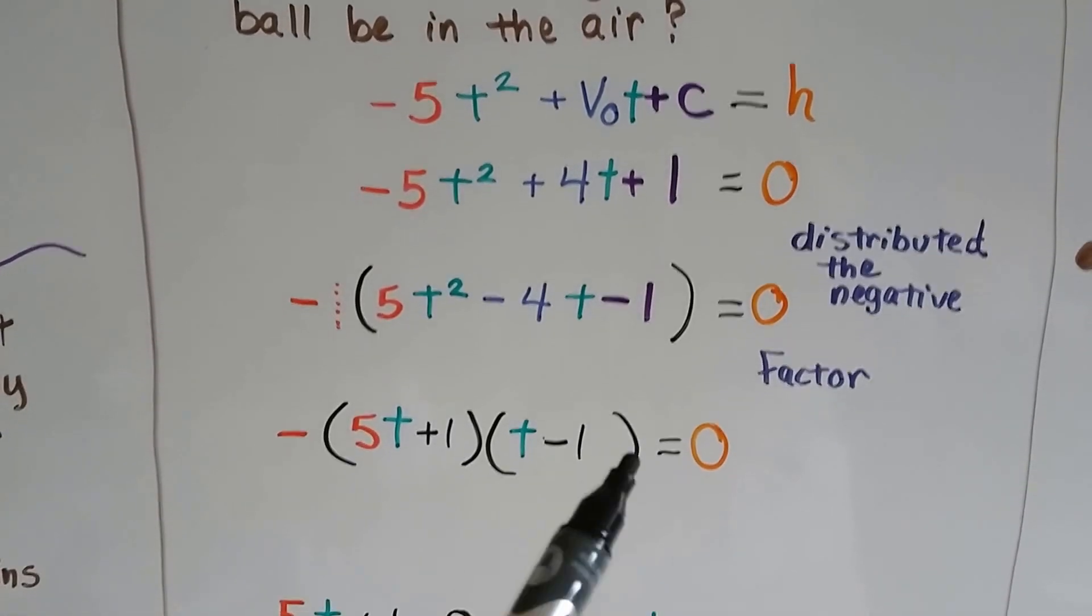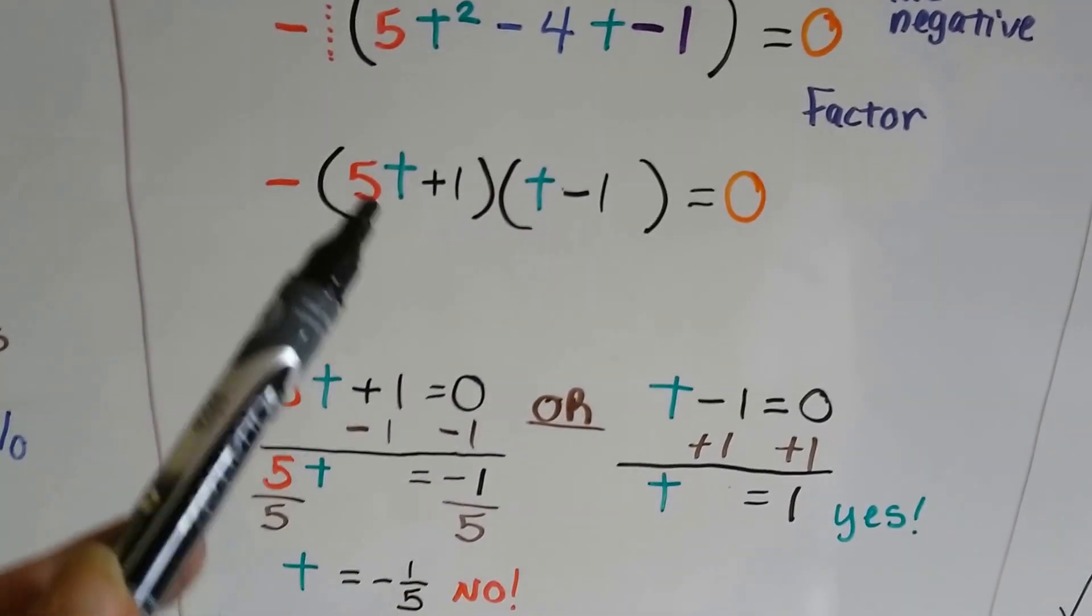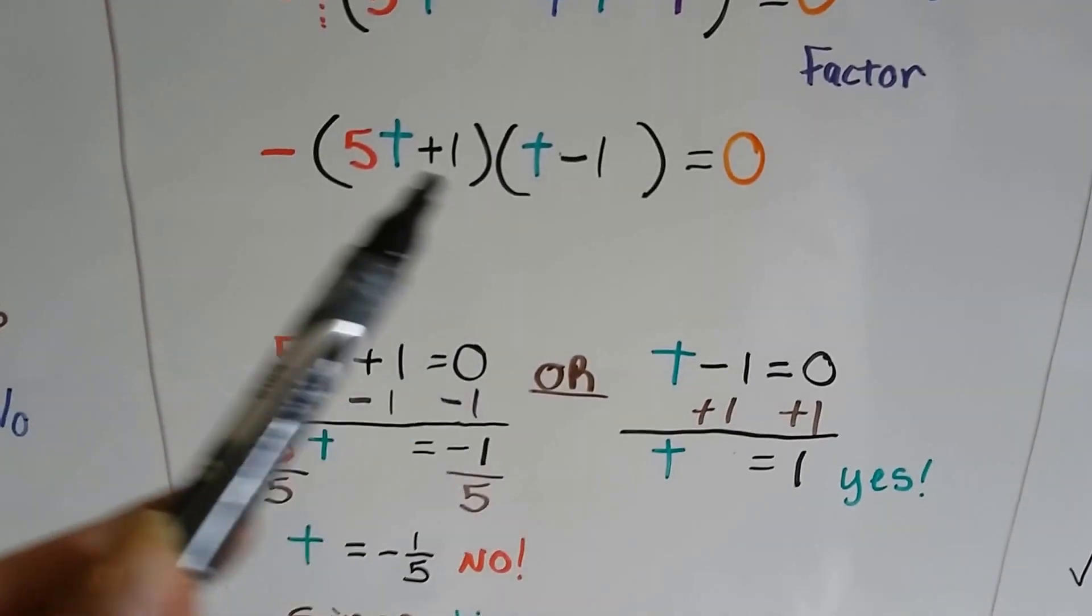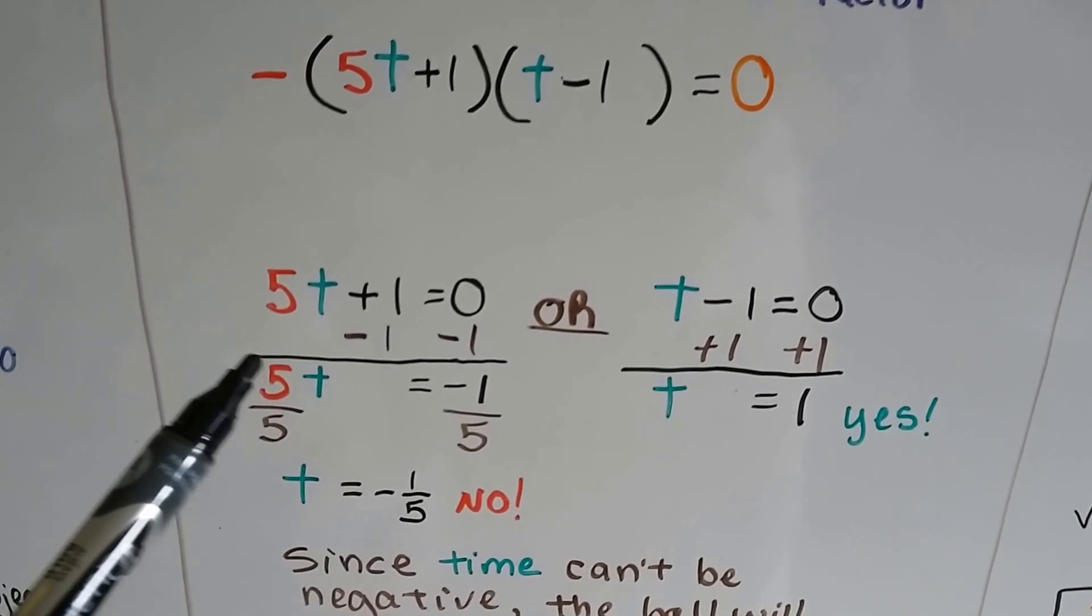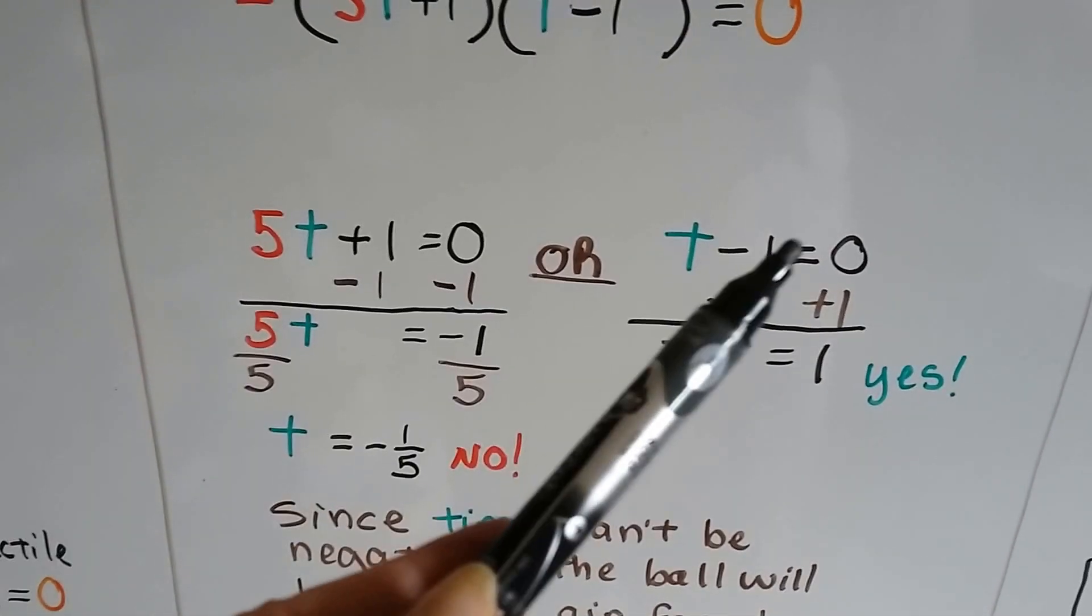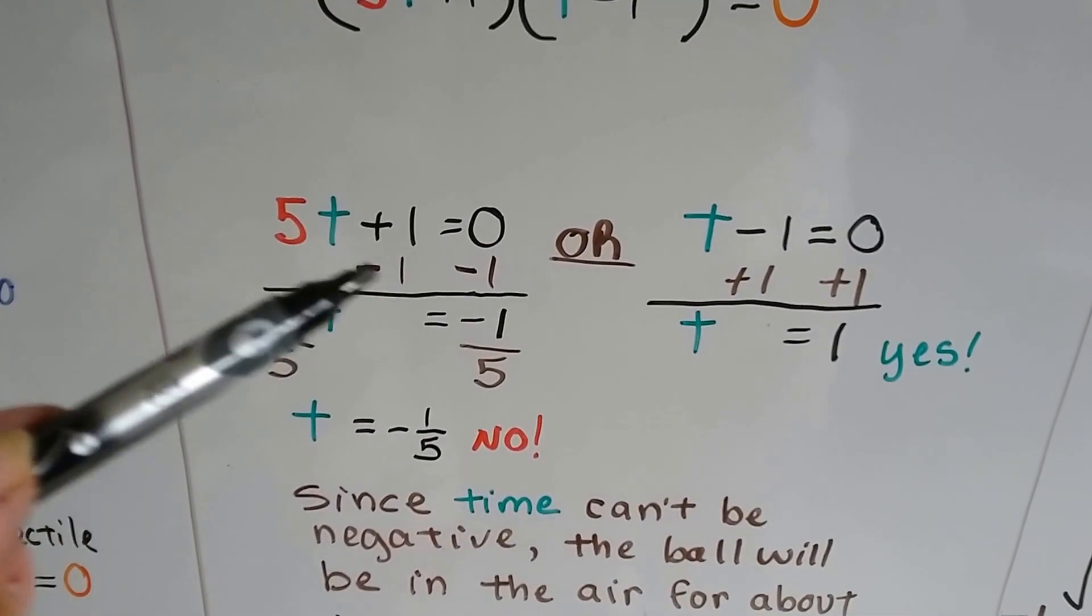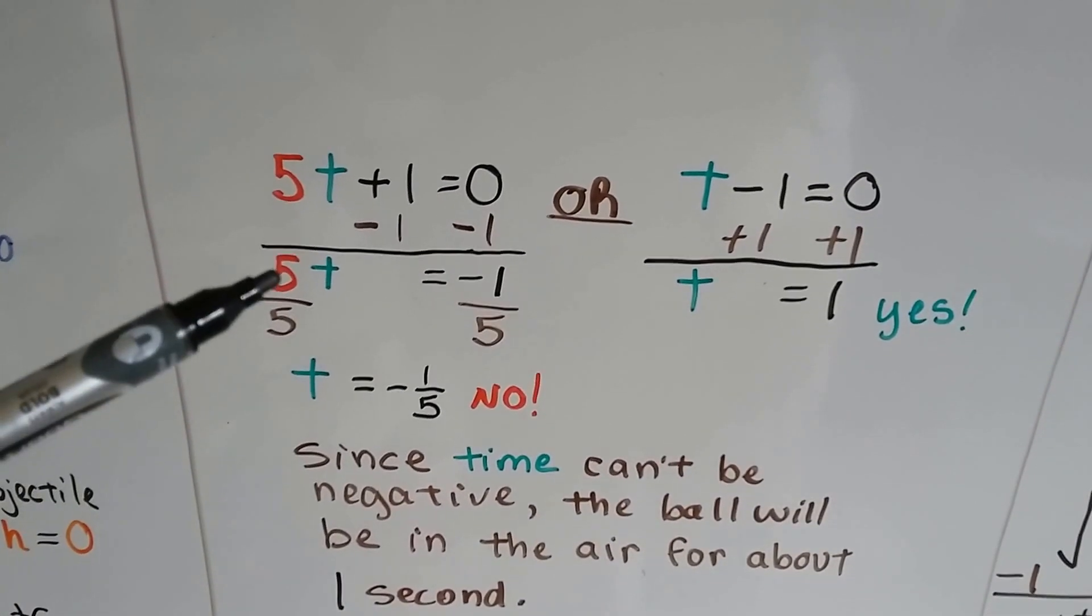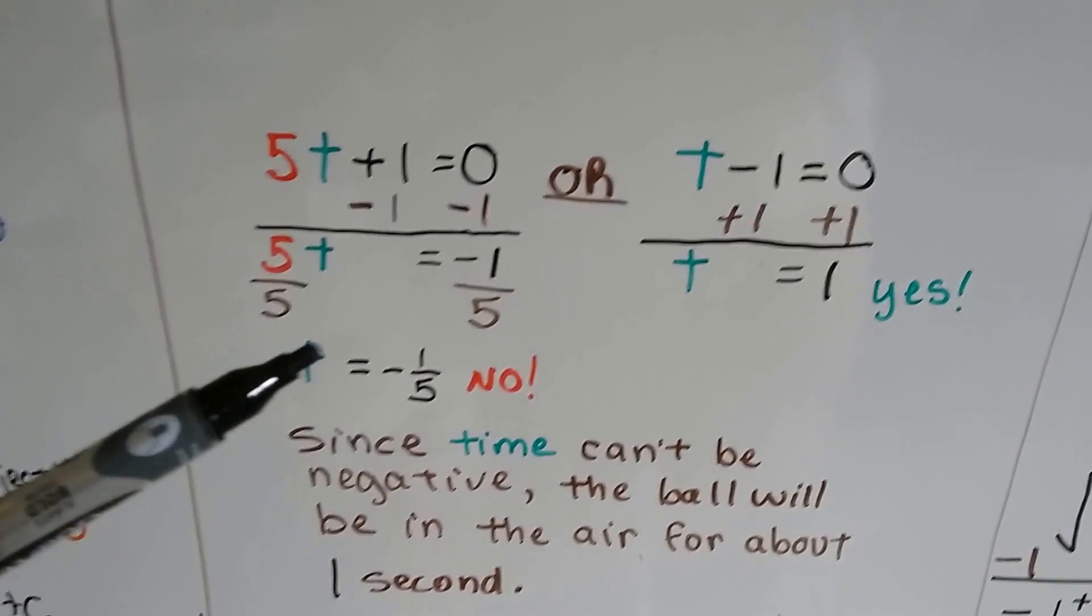And we're going to factor this as 5t plus 1 and t minus 1. And we're going to use that zero factor property and split these up to equal zero, so that we can find the solutions. We set 5t plus 1 equals 0 and t minus 1 equals 0. And we can take away 1 from each side to isolate this t, and then divide each side by the coefficient 5. So we get negative 1 fifth. Well, time cannot be a negative.